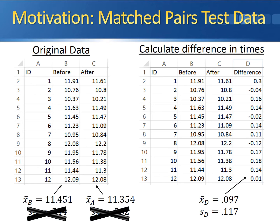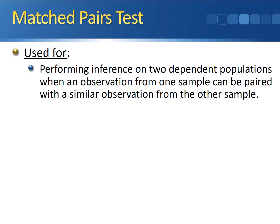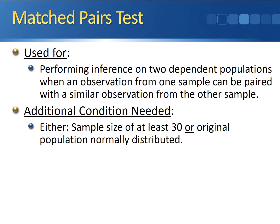It turns out that we don't even need the sample standard deviations for the individual before and after times. Formally, the matched pairs test is used for performing inference on two dependent populations when an observation from one sample can be paired with a similar observation from the other sample. In order to run this test, we need the same condition as the one-sample t-test: we either need a sample size of at least 30, or we need the original population to be normally distributed.